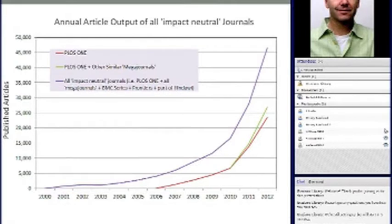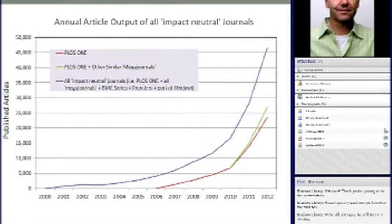In 2012, roughly 45,000 articles were published in the world that made no prejudgment on significance, impact, or readership of the content. In 2013, you can see that graph is going to become roughly 80,000 — it's going to roughly double. So this year, roughly 8% of the literature is being published in the model which makes no judgment on where an article sits on the high-to-low impact scale.